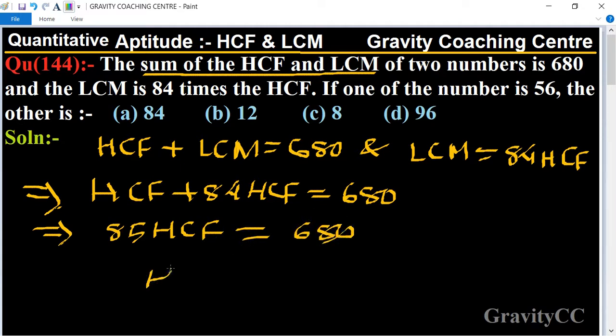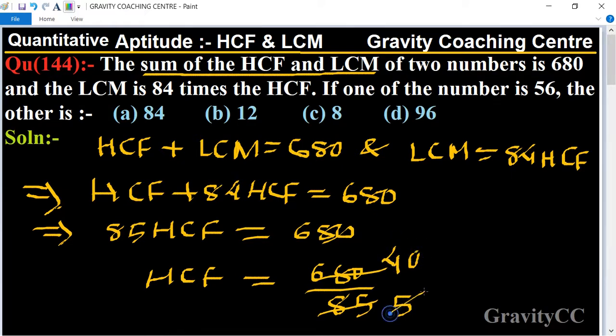So HCF equal to 680 upon 85. Cancel by 17: 17 times 5 is 85 and 17 times 4 is 68. So HCF is 8 and LCM equal to 84 into 8.